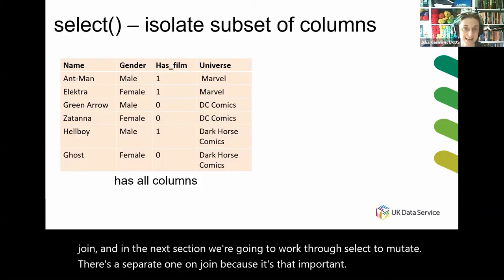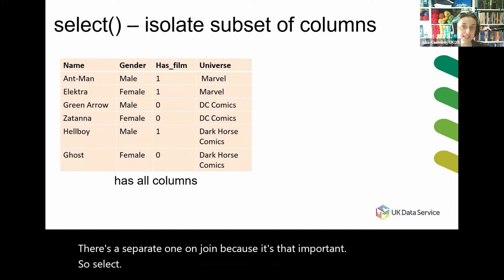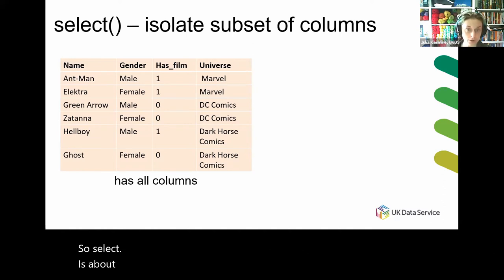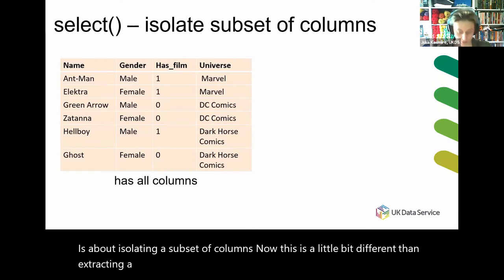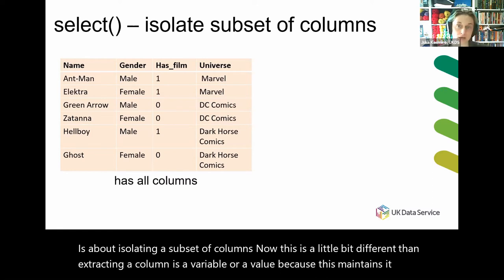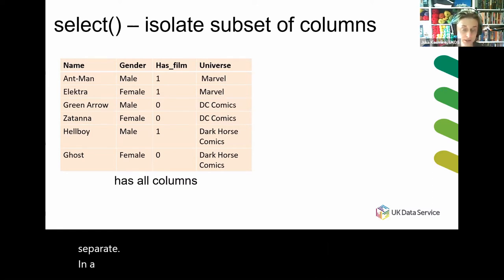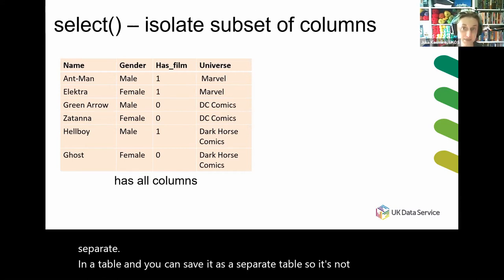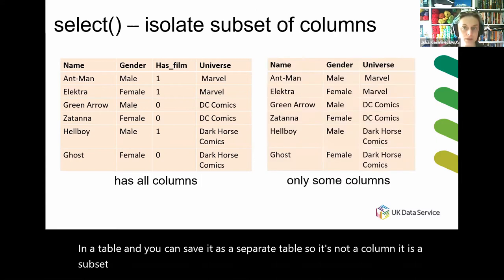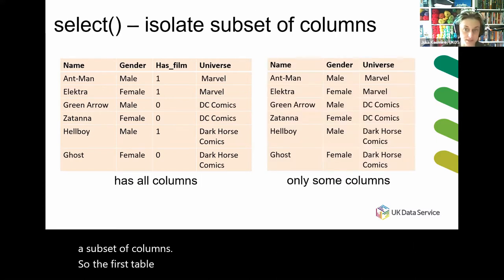Select is about isolating a subset of columns. This is a little bit different than extracting a column as a variable or a value, because this maintains it in a tibble — you can save it as a separate tibble. So it's not a single column, it is a subset of columns. The first table here has all the columns, and the second one only has some columns.